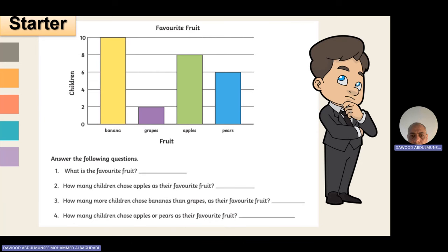When you are given a bar chart and asked to write about it, you can start: 'This bar chart represents the number of children who like different fruits — apples, bananas, pears, and grapes.' Then go to the descriptive writing where you compare and make contrasts between the different fruits: which one is the highest, which one is the least, which ones are similar, which one is bigger than or higher than another. Make comparisons between the different fruits.